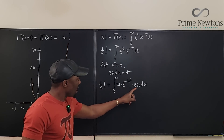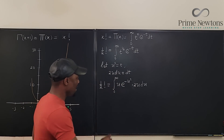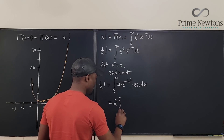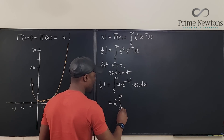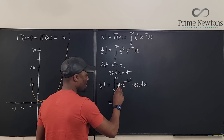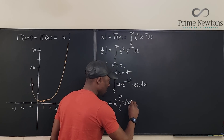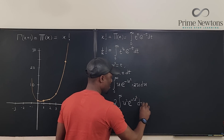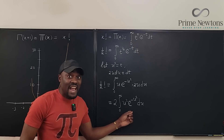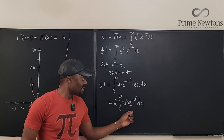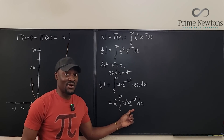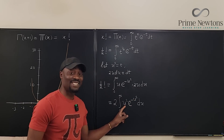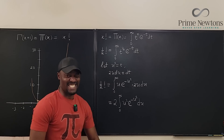Multiplying everything together, we get two times the integral from zero to infinity of u times u — which is u squared — times e to the negative u squared, du. This is a challenging integral because unless you know the Gaussian integral, you cannot integrate it directly. Notice the power in u squared here matches what appears in the exponent.